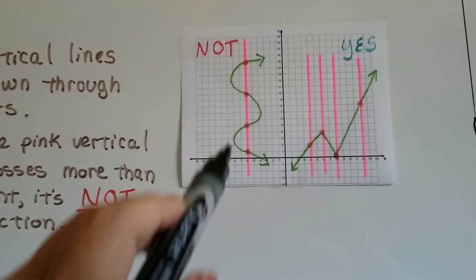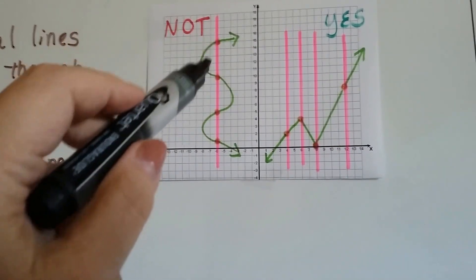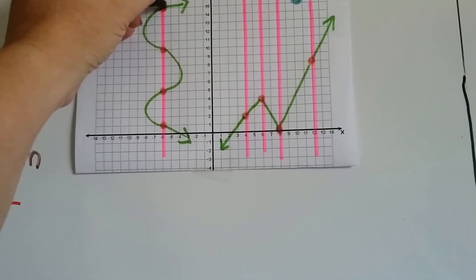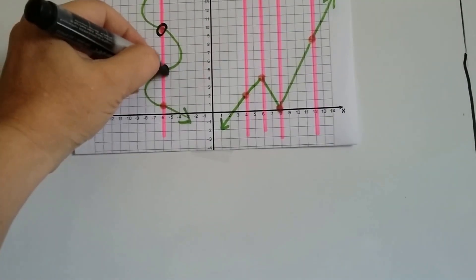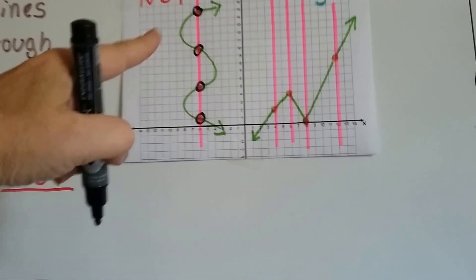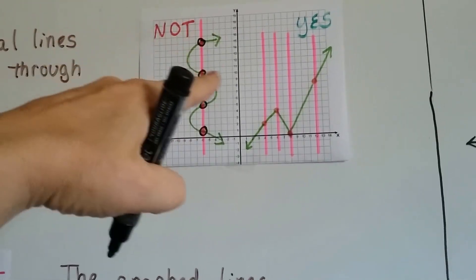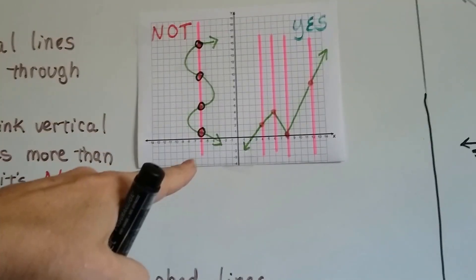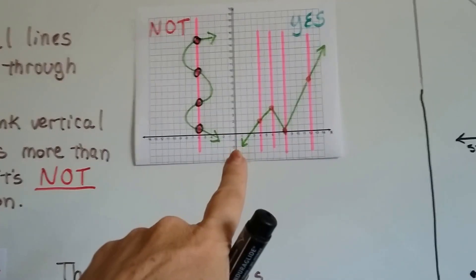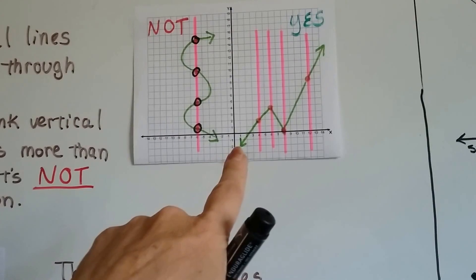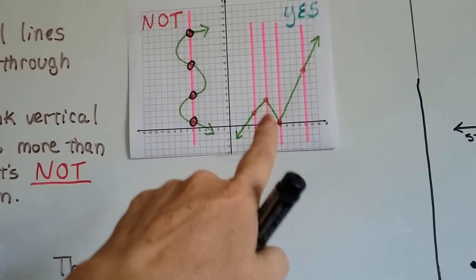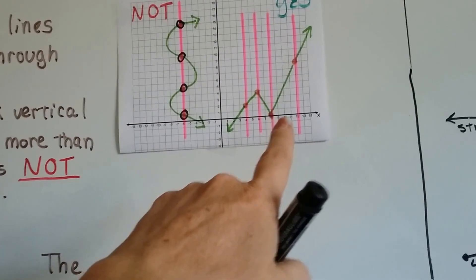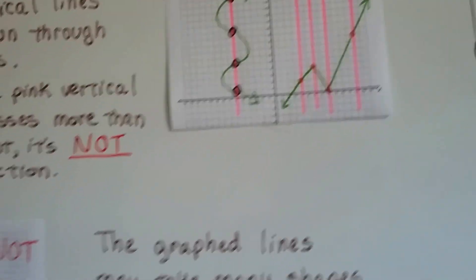Take a look at this. This one's not a function because there are four points on this line — the line was kind of curvy, and we drew the pink line through it and it hit four times. In this one, it is a function because even though this is kind of a zigzag line, the pink line went through it one time each time, so yes, that is a function.